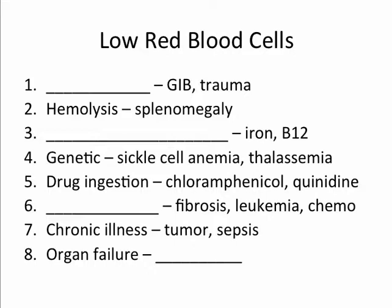Red blood cells can also be low in genetic diseases such as sickle cell anemia and thalassemia, drug ingestion such as with chloramphenicol and quinidine, bone marrow failure which can occur with fibrosis, leukemia, and chemo, chronic illness such as with tumors and sepsis, and organ failure, especially with the kidney.